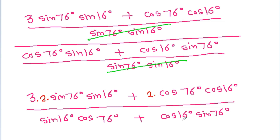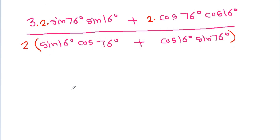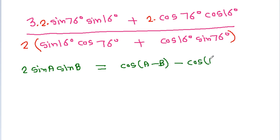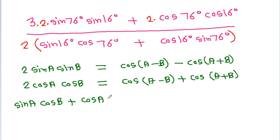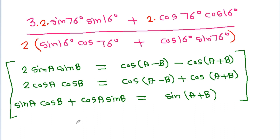cos 76 degree plus cos 16 degree sin 76 degree. And if we multiply numerator and denominator by 2, then 2 sin a sin b equals cos(a minus b) minus cos(a plus b), and 2 cos a cos b equals cos(a minus b) plus cos(a plus b), and sin a cos b plus cos a sin b equals sin(a plus b).